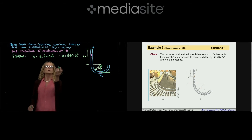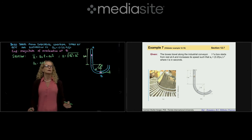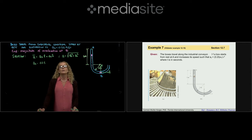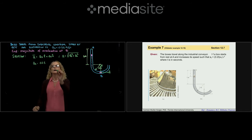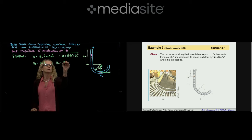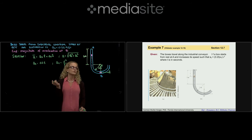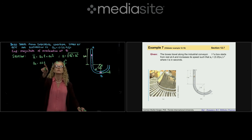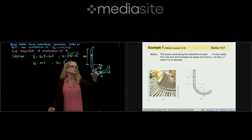We are given that the tangential acceleration is 0.2 times t, but we don't have the time, so we must find it first. The normal acceleration is v² divided by the radius of curvature. We don't have the velocity either, so we need to find both the velocity and the time. We do have the radius of curvature, which is 2 meters.